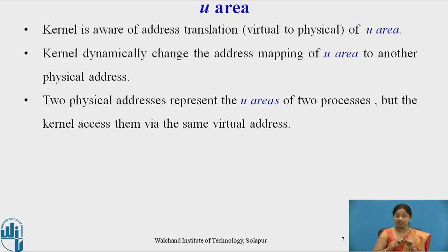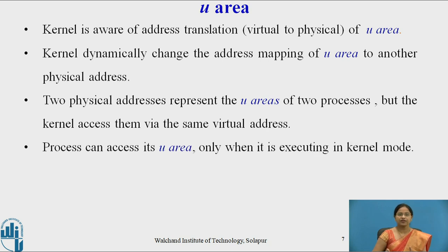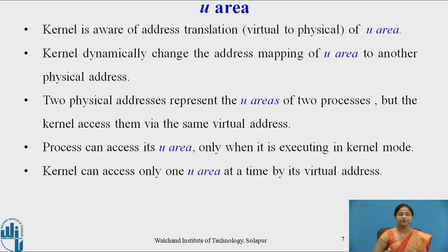When the virtual addresses of two processes are converted into physical addresses, there will be two different physical addresses for two different processes. Two physical addresses represent the u-area of two processes, but the kernel accesses them via the same virtual address. A process can access its u-area only when it is executing in kernel mode. The kernel can access only one u-area at a time by its virtual address.